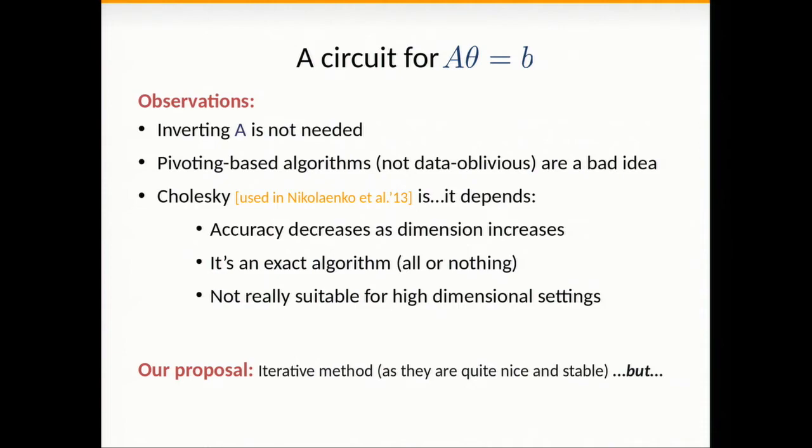Among those, the ones based on pivoting are not a good choice because they are not data oblivious. They make decisions based on data which has a bad circuit representation since all these choices have to be represented in the circuit. A good choice instead is the Cholesky decomposition which works in this setting because A is positive semi-definite. This was the choice done by Nikolaenko et al in previous work.